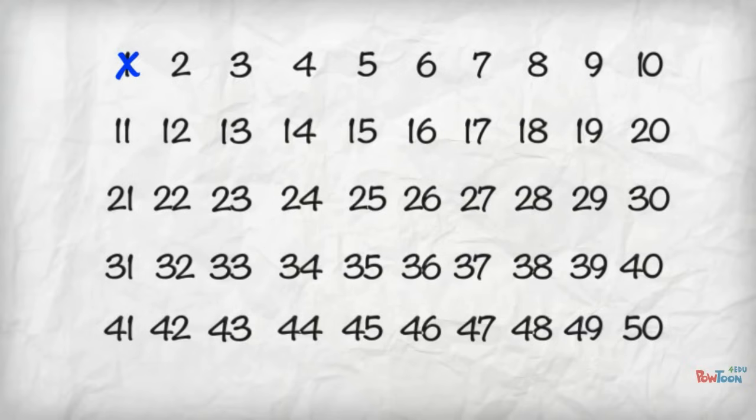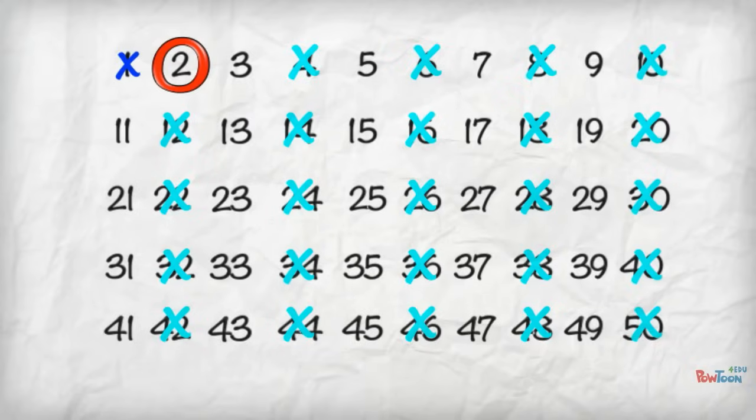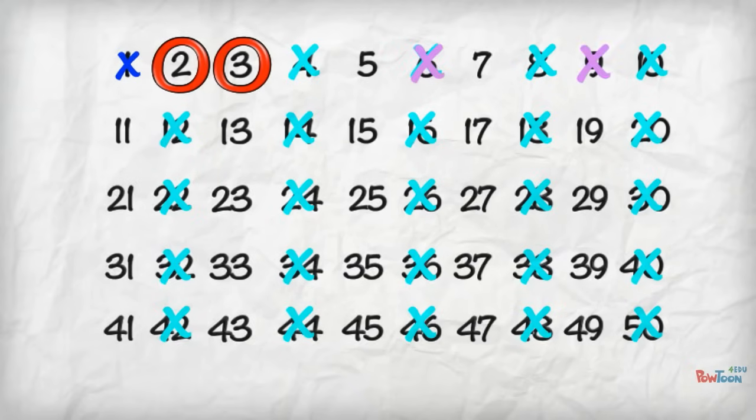Now you go to the first number that is not crossed out. That's 2. Mark it as PRIME. Now cross out all of its remaining multiples. Some have already been done, but I'll cross them off again so you can see the multiples.